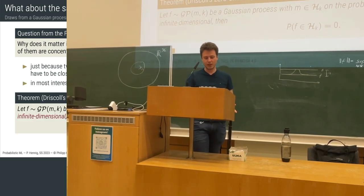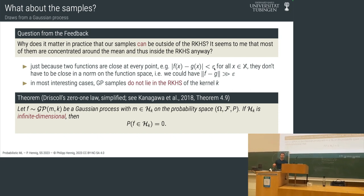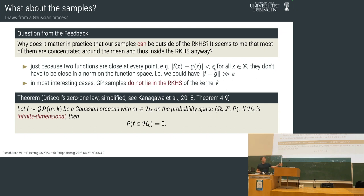Samples can lie outside of the RKHS. There is one very important case where they are actually inside the RKHS: if the RKHS is finite dimensional. For the feature construction of a Gaussian process, where you explicitly give a finite set of features, you can quite easily see that the samples lie in the space spanned by the parametric kernel. But as soon as the RKHS is infinite dimensional, samples will not lie in the RKHS with probability one — or phrased the other way: the probability that a sample path from a GP is actually an element of the RKHS is zero.